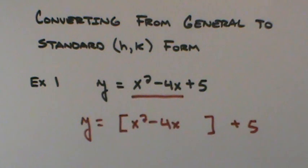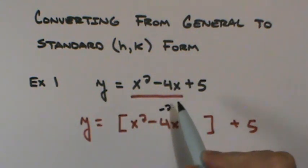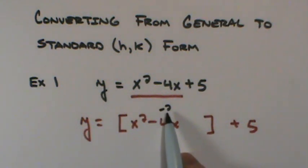And I have to ask myself, how do I complete the square here? If you recall, we'll cut the middle term in half. We'll call that a negative 2. And we square that. So negative 4 cut in half is negative 2. I square that, it would be plus 4.